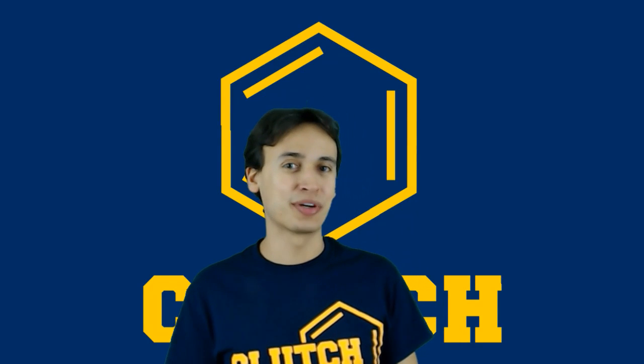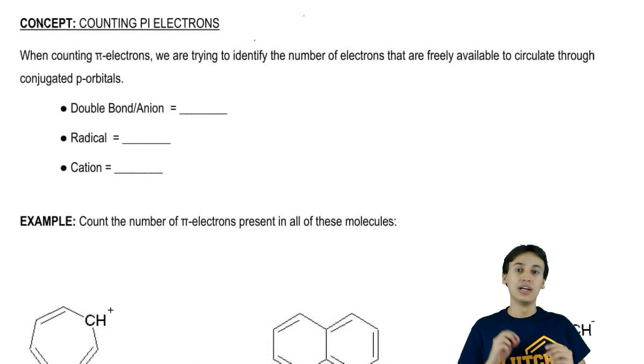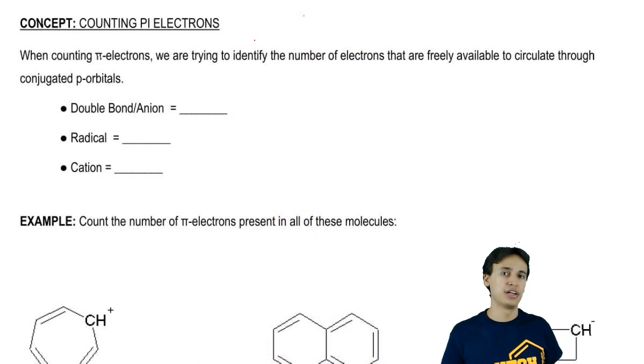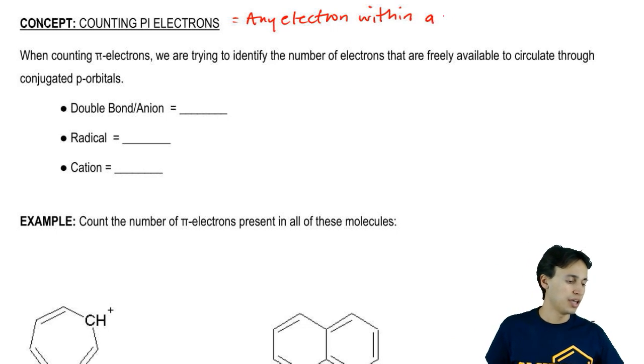In this video, we're going to become experts on counting pi electrons. Technically, a pi electron is any electron found within an unhybridized p orbital.